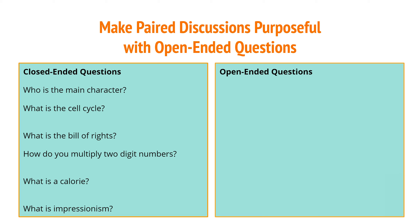We have questions: Who is the main character? What is the cell cycle? What's the Bill of Rights? How do you multiply two-digit numbers? What's a calorie? And what is impressionism? You can imagine that the responses to these questions would be fairly limited because typically there's only one correct answer or response.